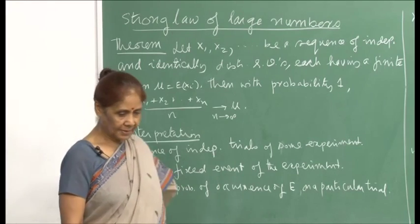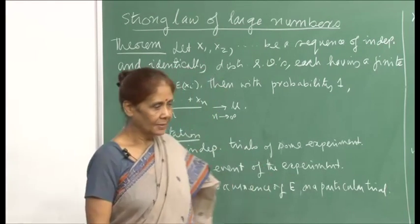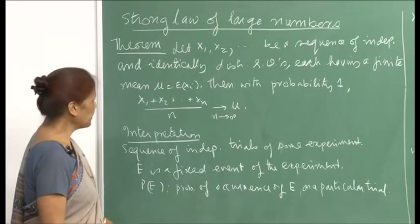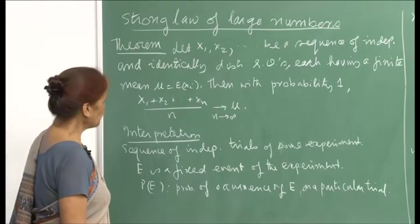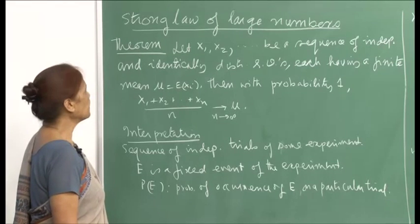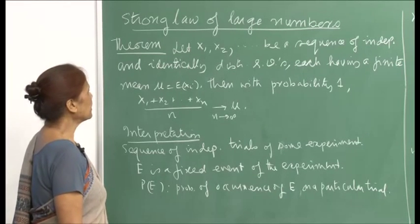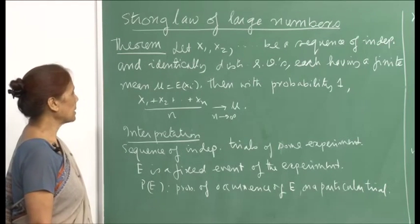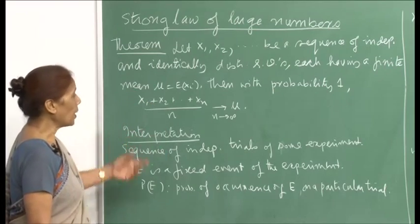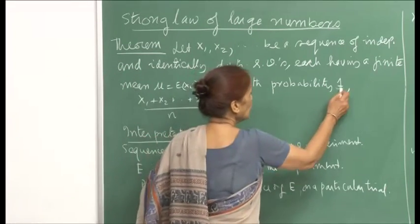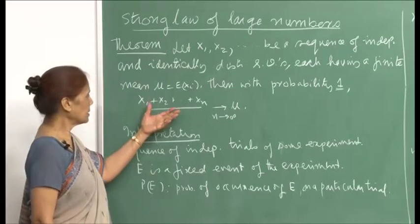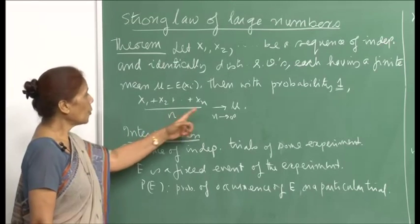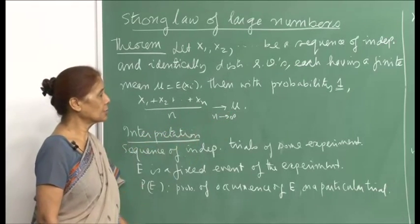Having discussed the weak law of large numbers, we will now talk about the strong law of large numbers. The theorem states that if x_1, x_2, ..., x_n is a sequence of independent and identically distributed random variables, each having a finite mean μ = E[x_i], then with probability 1, the sample average (x_1 + x_2 + ... + x_n)/n will converge to μ as n goes to infinity.